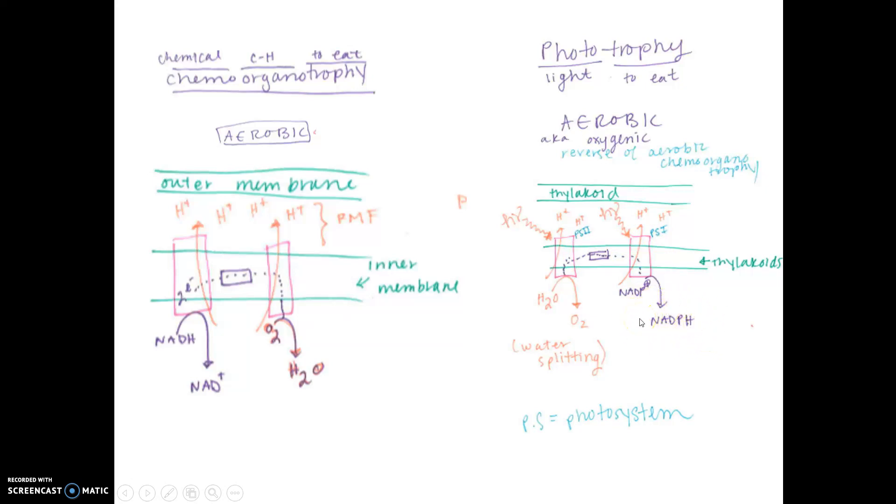NADPH is what we use for anabolic processes. NADH we get and use through catabolic processes. NADPH is for anabolic - building things like carbohydrates. This is referred to as the light-dependent reactions within photosynthesis. PS stands for photosystem, where we get our energy from light.